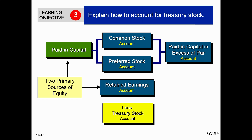Today we will discuss one more component of stockholders' equity: treasury shares. Treasury shares or treasury stock is a contra-capital account. Contra means opposite — so when normal capital accounts like common stock or preferred stock increase, we credit them. But when treasury shares increase, we debit them. The purpose of purchasing treasury shares and why we debit them are what we will look into in learning objective number three.